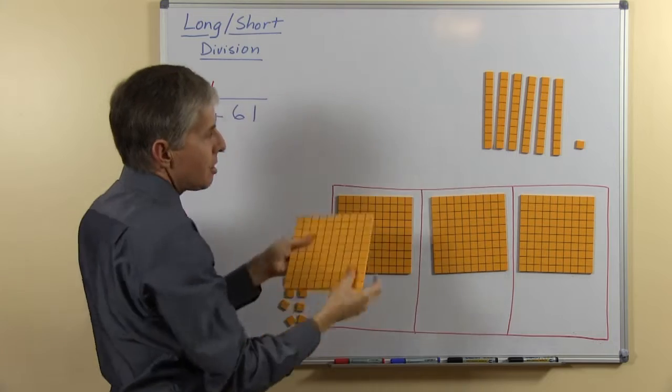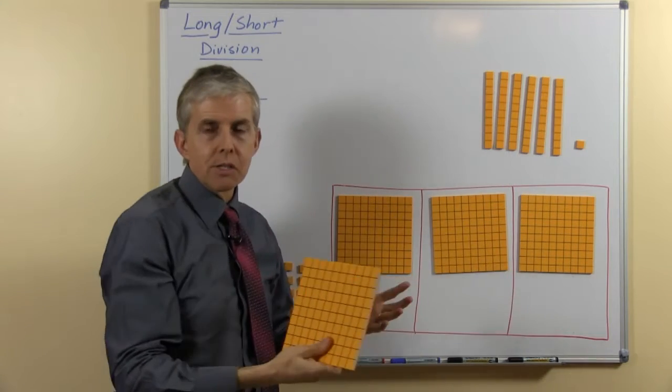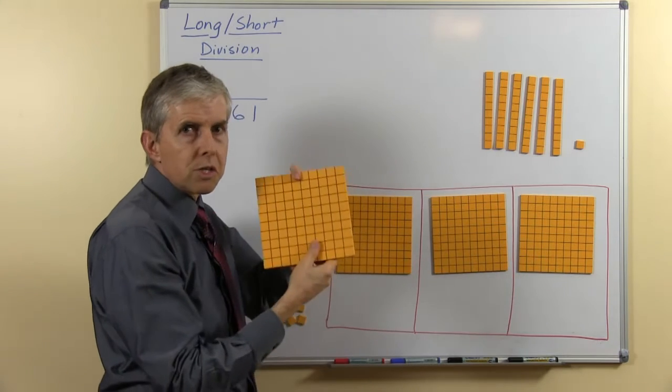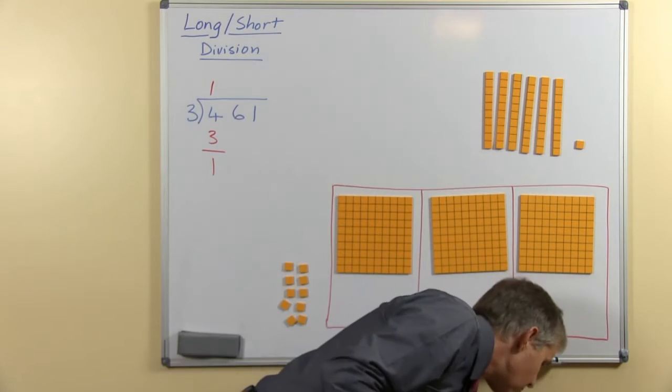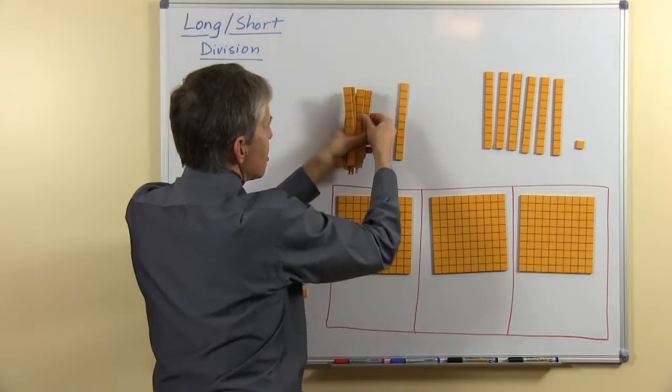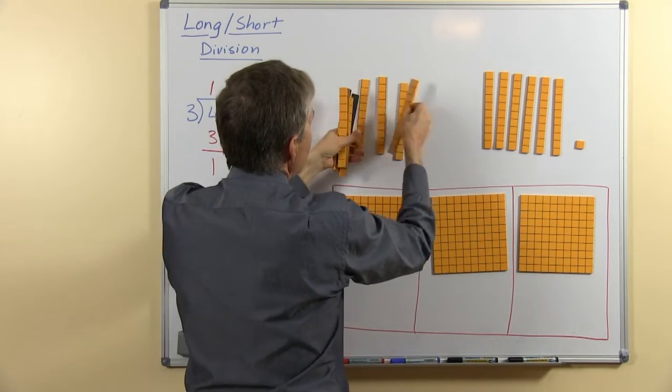So here's another hundred, we can't share this one because that wouldn't be fair, all our shares have to be equal. So we're going to swap this or trade it, there's different words we can use, but we're going to swap it for 10 tens. So I'll just put these new tens up here.